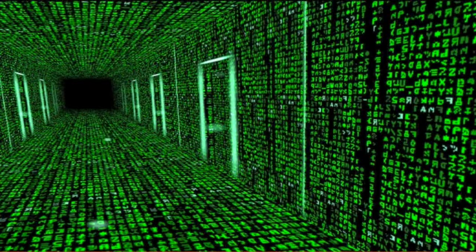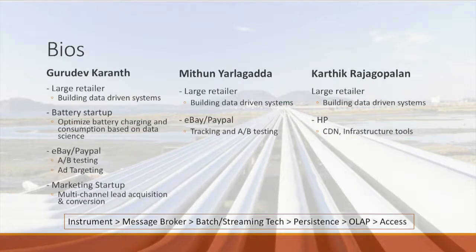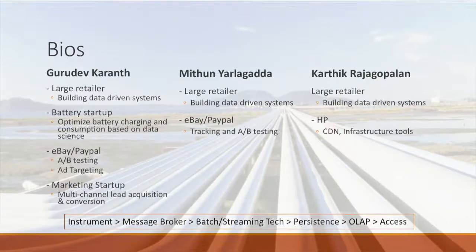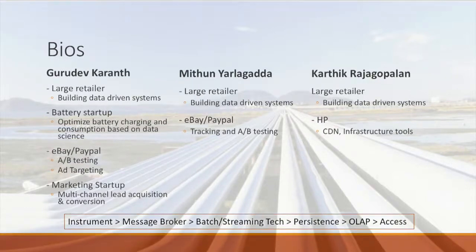If you look at your data today, we live in a world where data is being produced, processed, analyzed, predicted, and prescribed. Looking at all the applications, there's a standard theme: there is instrumentation that happens, then information either goes through a message broker or into some sort of persistence layer where you're using either batch or stream. Then you're building overlap tools on top, and then you get into data access — which could be users running reports, machines, or bots.